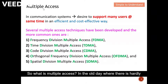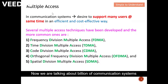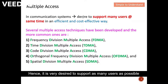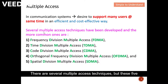So what is multi-access? In the old days there was hardly any communication system, but now we are talking about billions of communication systems. Billions of devices want to access limited resources like spectrum, hence it is very desirable to support as many users as possible at the same time in an efficient and cost-effective way.